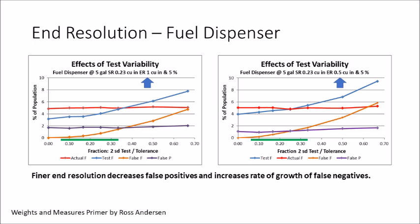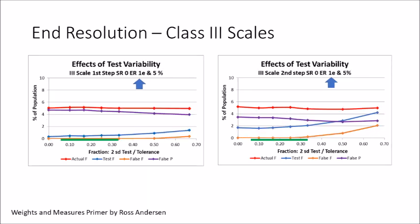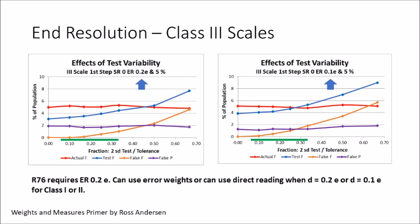This is also true of the 5-gallon test, with very similar graphs comparing 1 cubic inch versus 0.5 cubic inch graduations. To really see the effect of end resolution, let's look at the class 3 scales. The figure on the left is the first tolerance step and the right is the second tolerance step — everything seems to have gone crazy. The false positives are well over 4% and the false negatives have dropped to nearly zero. What's happening is that end resolution is highly important in getting the tolerances right. R76 requires resolving the errors to at least 0.2e, and by doing so we get the errors within reasonable risks.